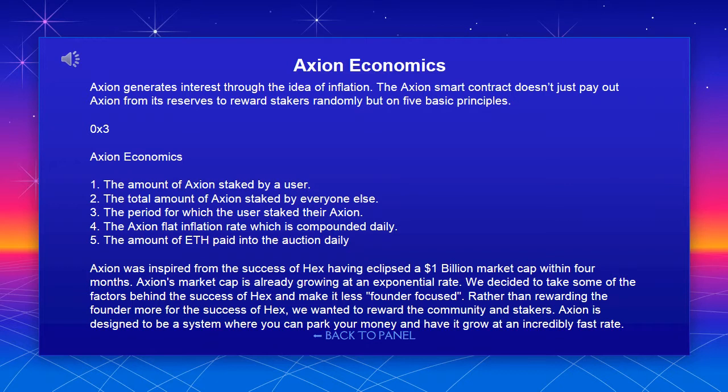Axion Economics: Axion generates interest through the idea of inflation. The Axion smart contract pays out based on five basic principles: one, the amount of Axion staked by a user; two, the total amount of Axion staked by everyone else; three, the period for which the user staked their Axion; four, the Axion flat inflation rate, compounded daily; and five, the amount of ETH paid into the auction daily.